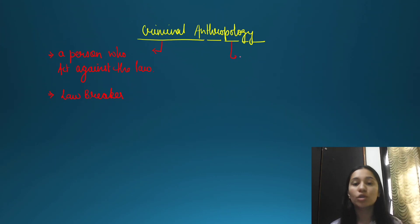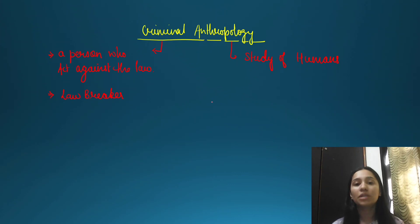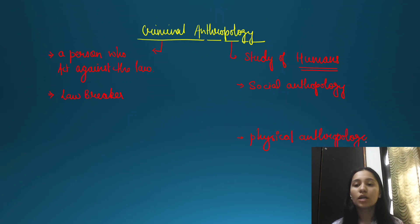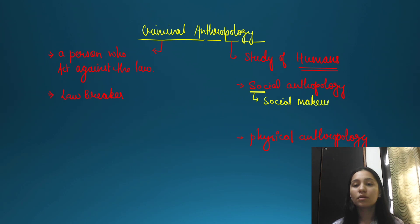Anthropology has two sections: social anthropology and physical anthropology. Social anthropology deals with the social makeup of the criminal person — their social environment, the people in that person's life such as parents or family. The environment around us is incorporated into our behavior.